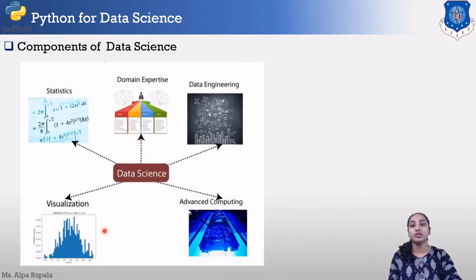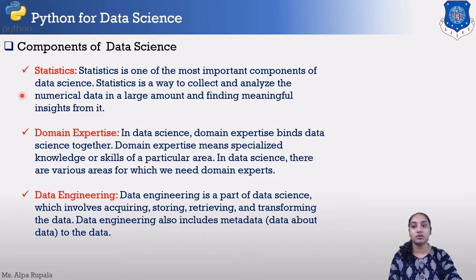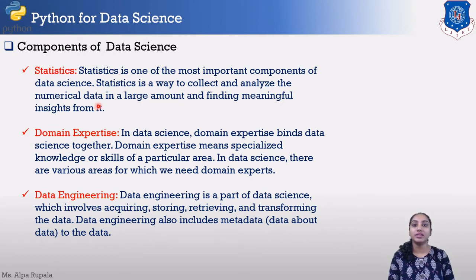The components of data science include statistics, domain expertise, data engineering, advanced computing, and visualization. Starting with statistics: it is one of the most important components in data science, which is basically a way to collect and analyze numerical data. Whatever numerical data terms you encounter will be related to statistics.